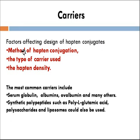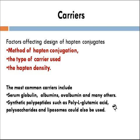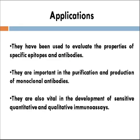Regarding carriers, the factors that affect the design of hapten conjugates include the method of hapten conjugation, the type of carrier used, and the hapten density. The most common carriers used are mostly proteins like serum globulin, albumins, ovalbumin, and many others. Sometimes synthetic polypeptides like poly-L-glutamic acid have also been used, and recently polysaccharides and liposomes have also been used as carriers. Haptens have been used to evaluate the properties of specific epitopes and antibodies, in the purification and production of monoclonal antibodies, and in the development of sensitive quantitative immunoassays.